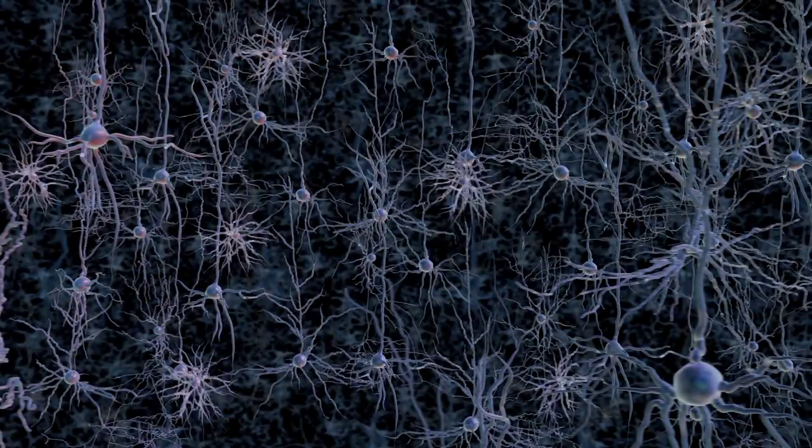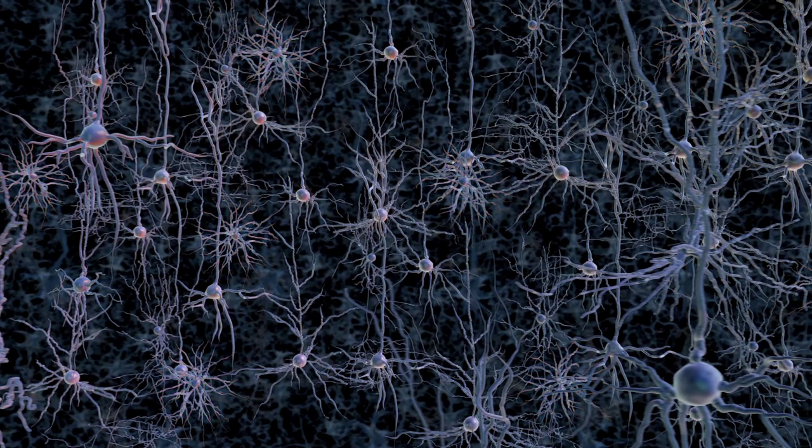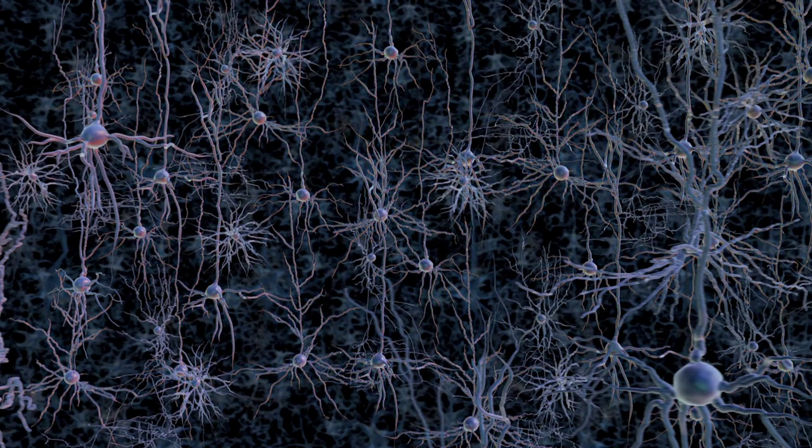For example, these cells, the basket cells, have small input branches and output branches, and they release pulses of chemical that inhibit their targets. Whereas these cells, the pyramidal cells, are large and project long distances and they excite the cells that they target.